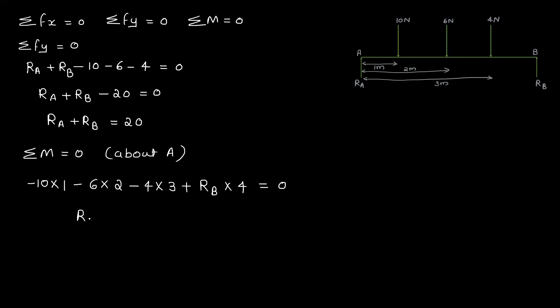RB into 4 equal to 10 plus 12 plus 12. That is equal to 34. Then RB equal to 34 by 4, that is equal to 8.5.